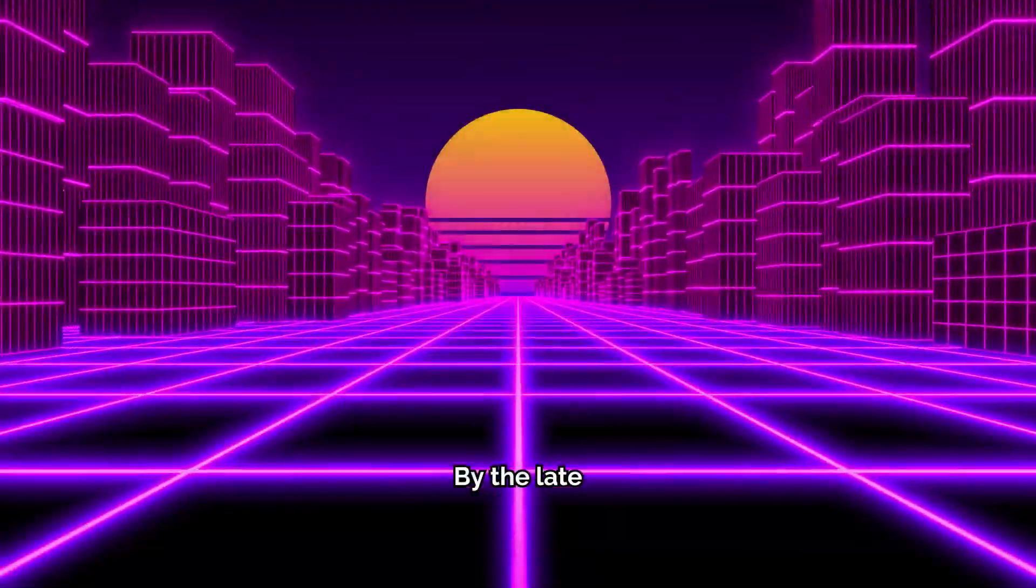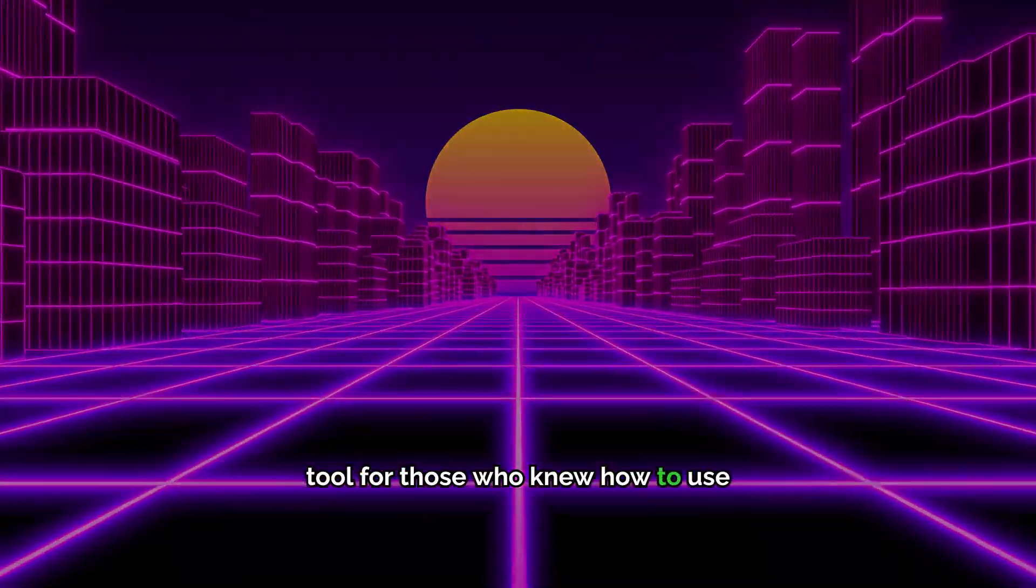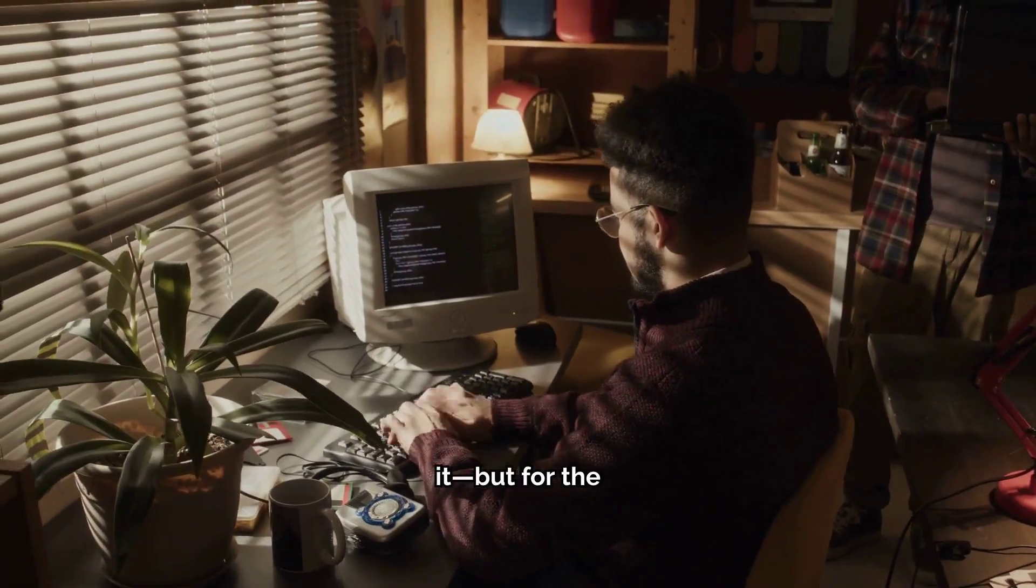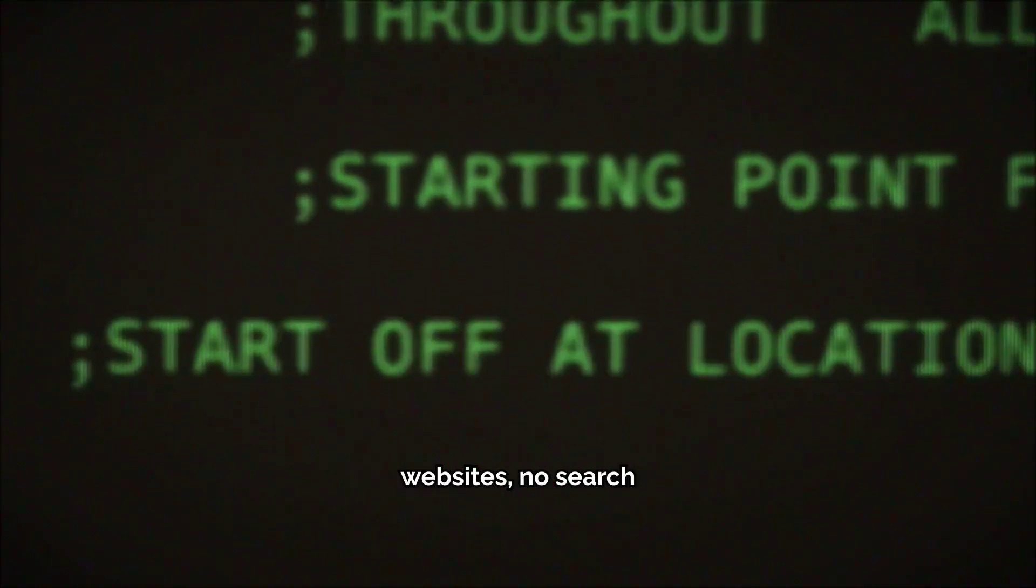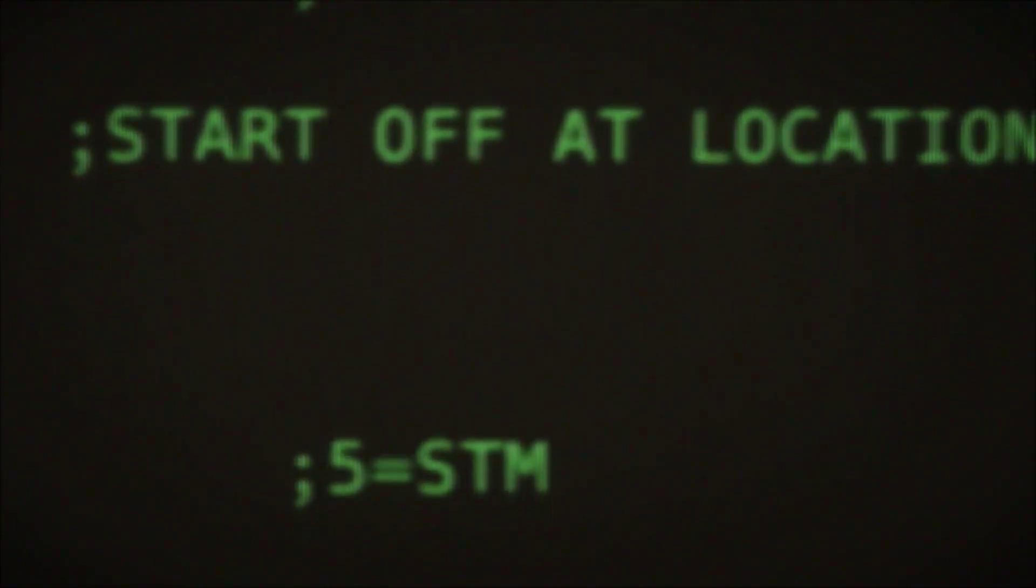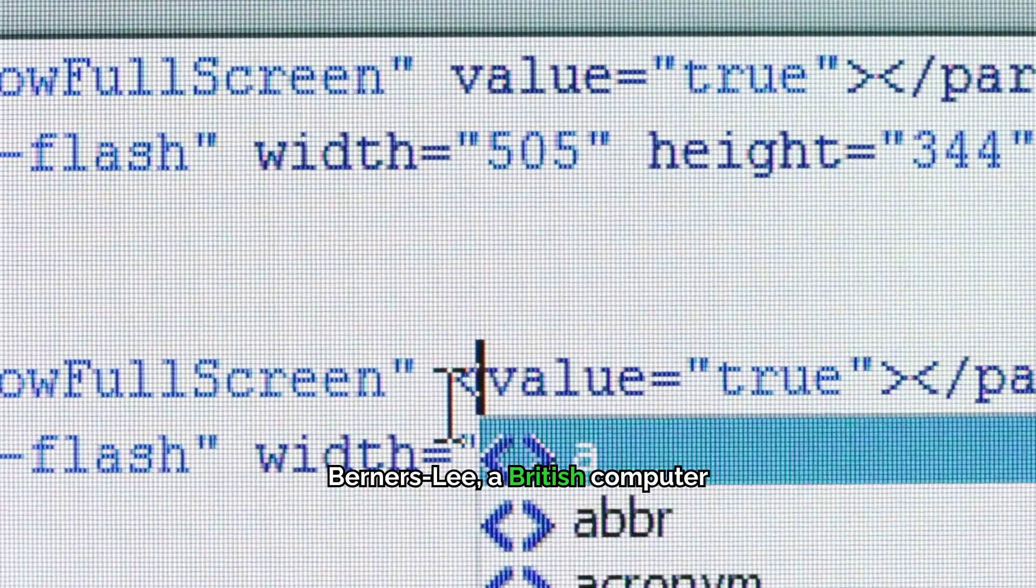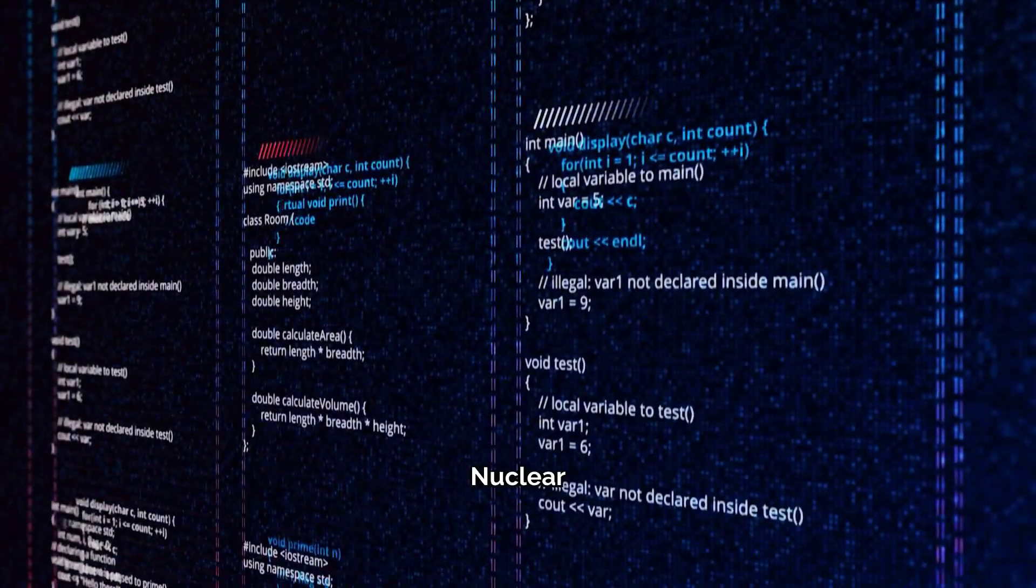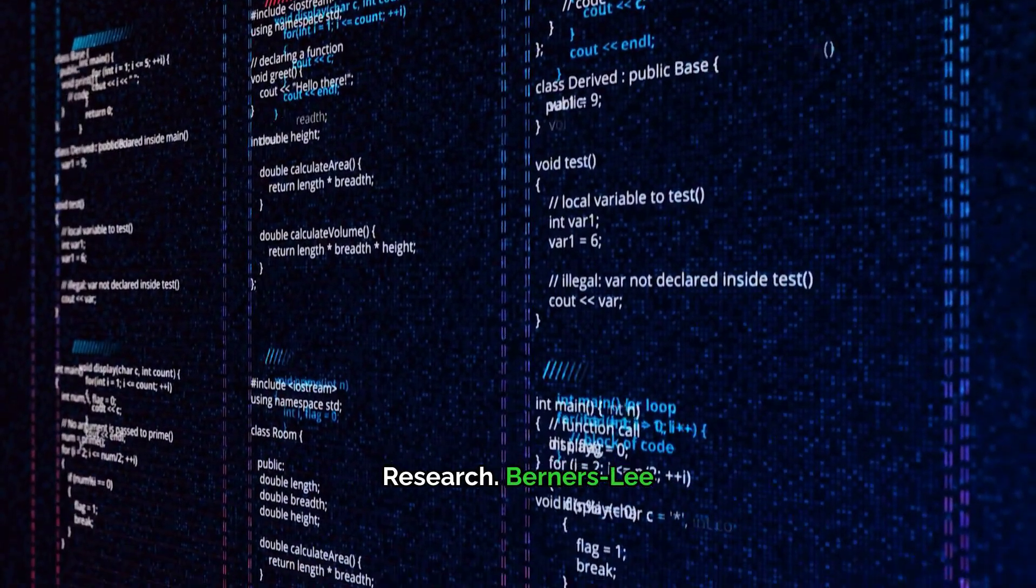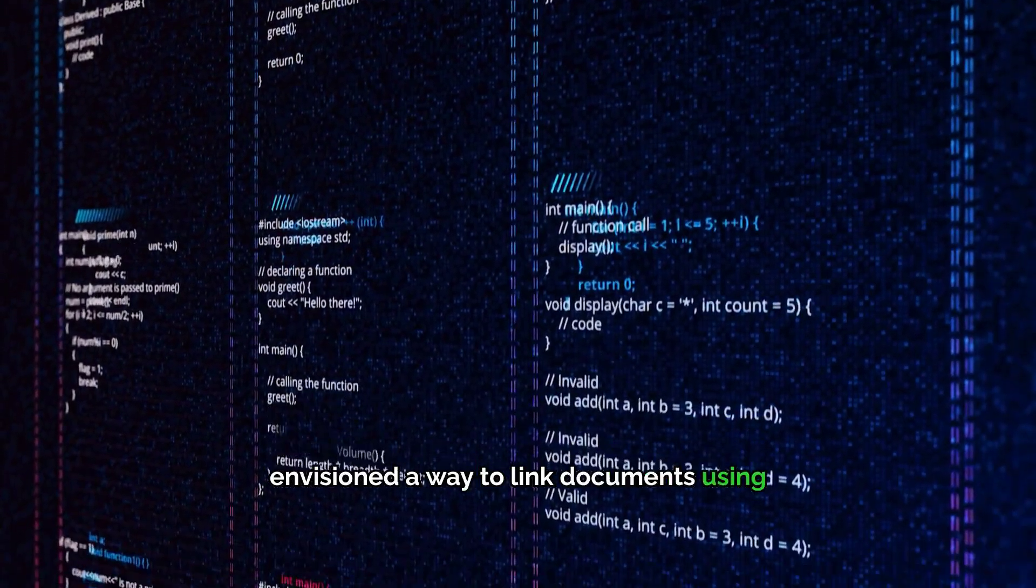By the late 1980s, the Internet was a powerful tool for those who knew how to use it. But for the average person, it was still inaccessible and confusing. There were no websites, no search engines, no user-friendly interfaces. Enter Tim Berners-Lee, a British computer scientist working at CERN, the European Organization for Nuclear Research. Berners-Lee envisioned a way to link documents using hypertext, creating a web of information that could be easily navigated.